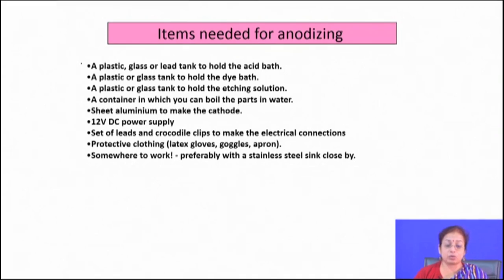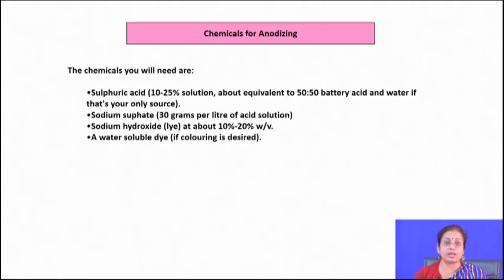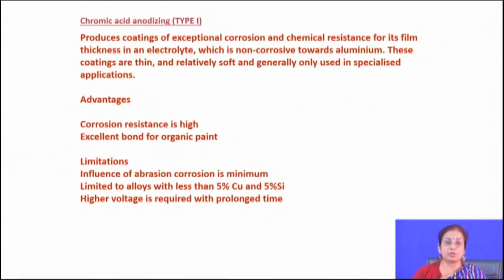The equipment needed includes a plastic, glass, or lead tank to hold the acid bath and dye bath, a container for the sealing solution, and a 12-volt DC power supply unit. A sheet of aluminum is used to make the cathode, along with leads and crocodile clips for electrical connections, and protective clothing. Chemical solutions may include 10 to 25 percent sulfuric acid solution, or sodium phosphate, sodium hydroxide, and water-soluble dyes.